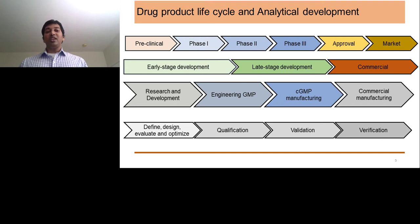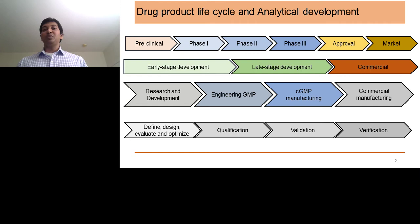Validation is a more robust process in which you take all the parameters performed in qualification and apply them in other situations like robustness, as well as repeatability of the assay in different conditions. This is where the assay is really logged in and applied to a very specific biological product. Once validation is done, you're good to send it for a BLA and then do verification.